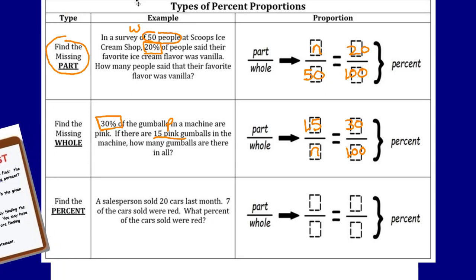The last type is when you're trying to find the percent. A salesperson sold 20 cars last month; seven of the cars were red. What percent of the cars sold were red? They sold 20 cars — that's the whole, the total number of cars sold. Out of those 20, seven were red — that's your part. We want to know what percent this seven represents, so the percent amount is going to be your n, the unknown variable. Remember, percent is always out of 100, so that hundred will never change when you're writing a percent proportion. If you need to pause the video to catch up on filling your notes, please do so.